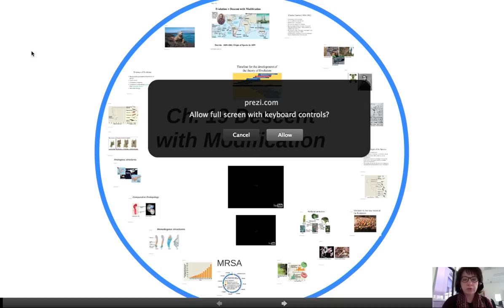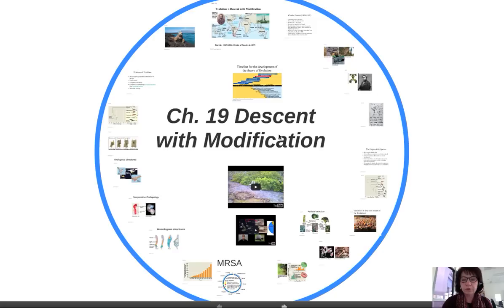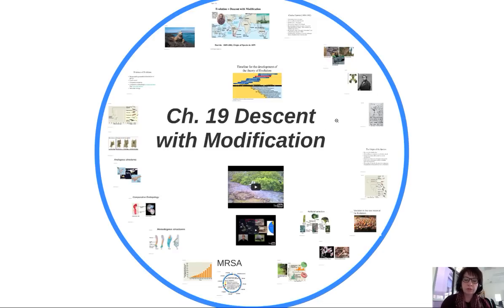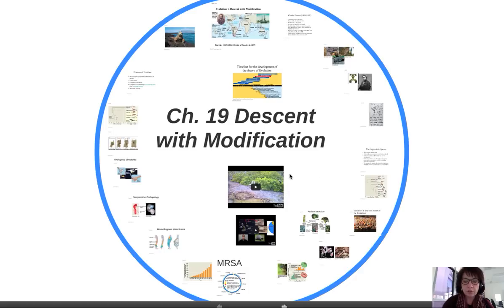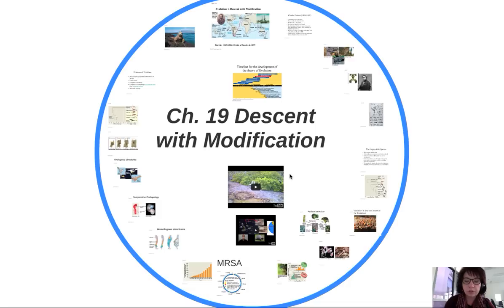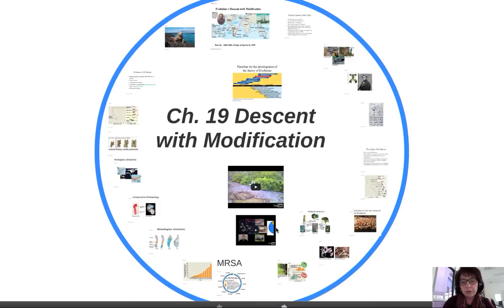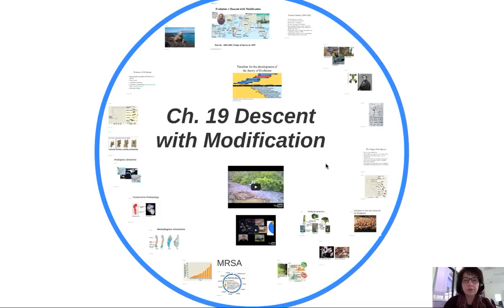Welcome to the first of four chapters where we'll focus on evolution. This chapter is 19, Descent with Modification. Before I zoom into the Prezi, let me point out two YouTube videos linked to the Prezi: Dr. Strong's YouTube tour of the Galapagos Islands, which she narrated from her 2012 trip, and Bozeman Biology's Evidence for Evolution screencast, which I fully endorse.